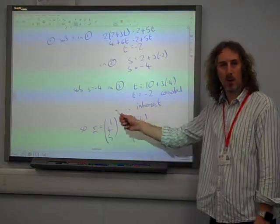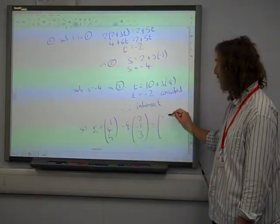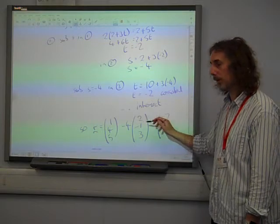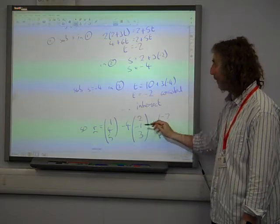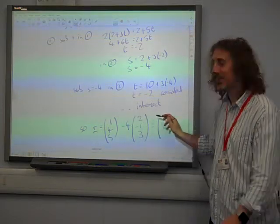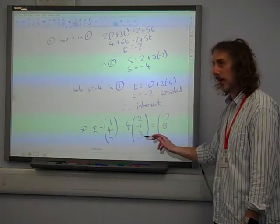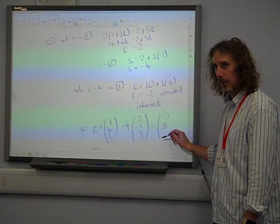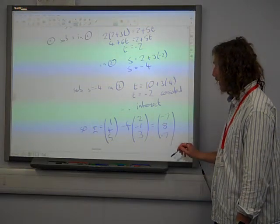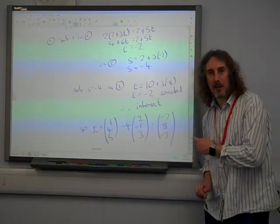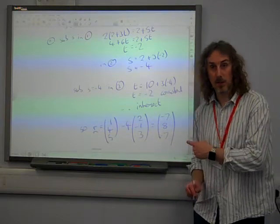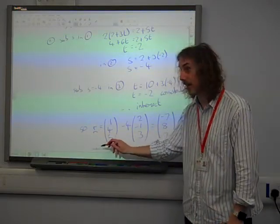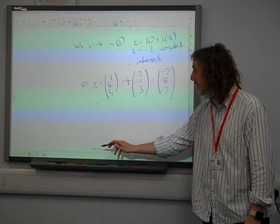Which gives me 1 take away 4 is negative 7. 4 plus 4 is 8. 5 take away 12, 12 minus 7. Yes. That's the right answer. And that gets full marks. But I don't like it. Because what did the question say?